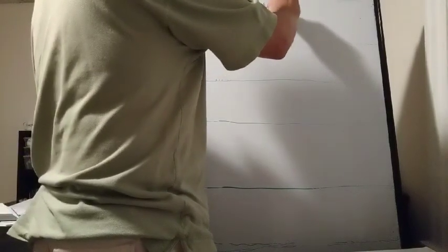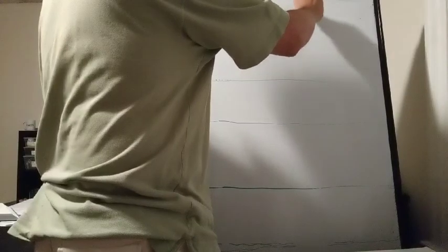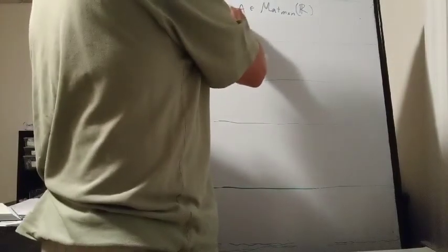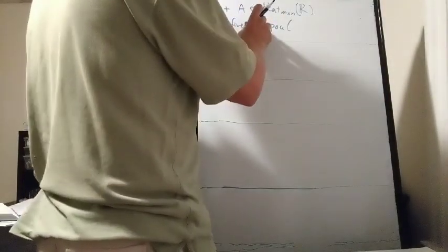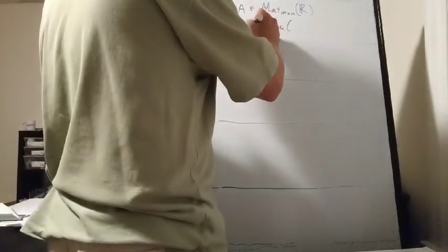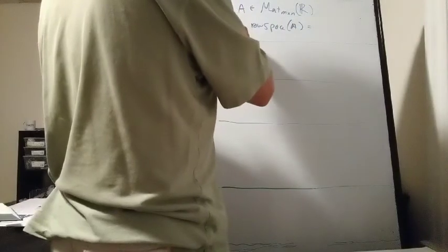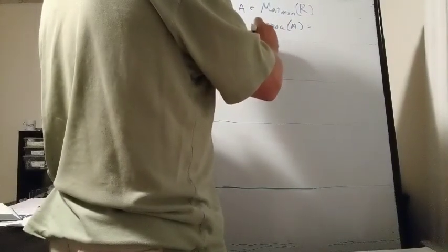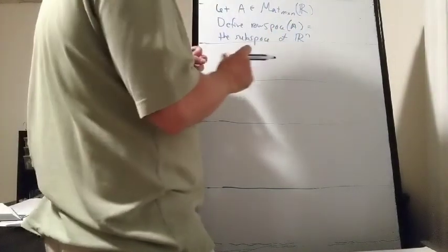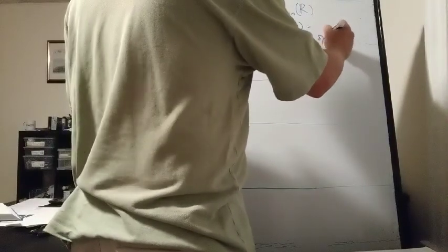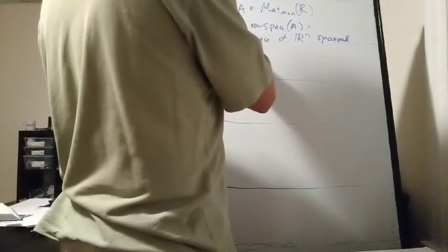Let A be an m by n matrix with real entries. We'll define the row space of A to be the subspace of Rn — since this is an m by n matrix, every row has n numbers in it, so they're all vectors in Rn — the subspace of Rn spanned by the rows of A.